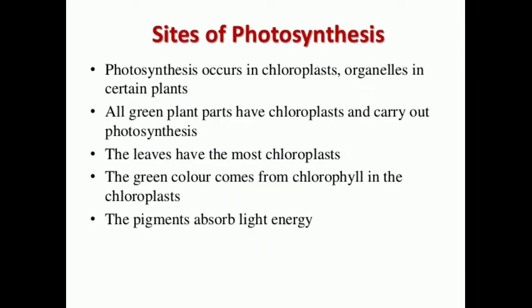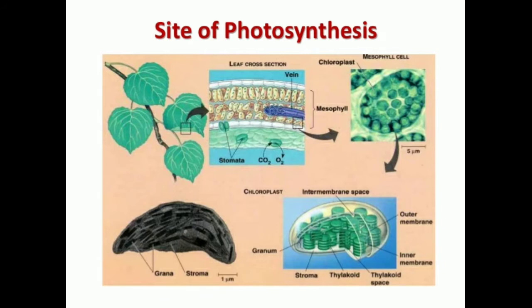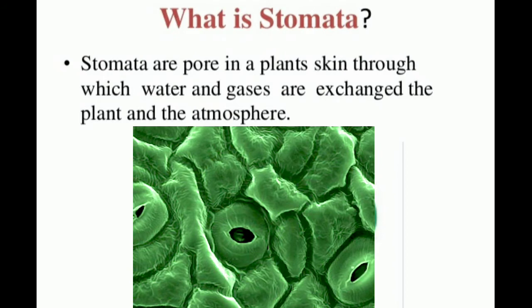Photosynthesis occurs in chloroplasts, which are organelles present in all green plants. The leaves have the most chloroplasts. The green color comes from chlorophyll in the chloroplast, and this pigment absorbs light energy. A chloroplast contains stroma, which is a fluid, and grana, which are stacks of thylakoids. The thylakoids contain chlorophyll — the green pigment that captures light energy and converts it into chemical energy.